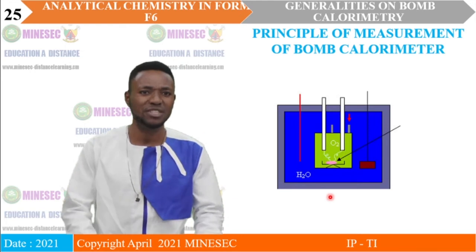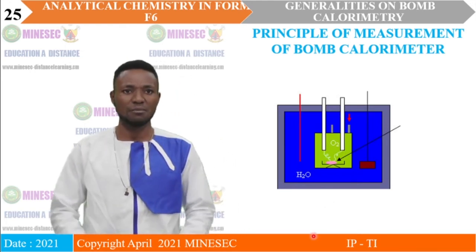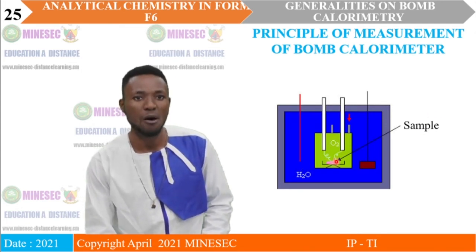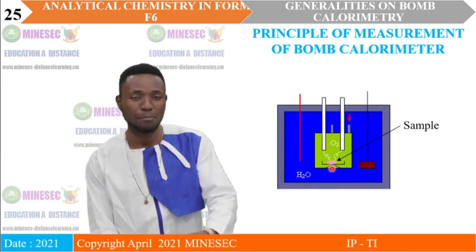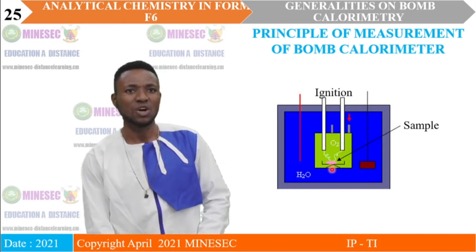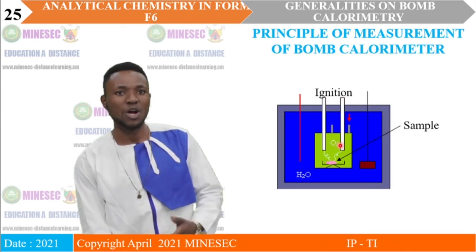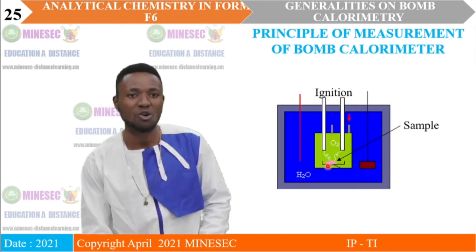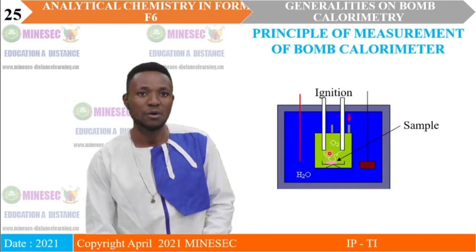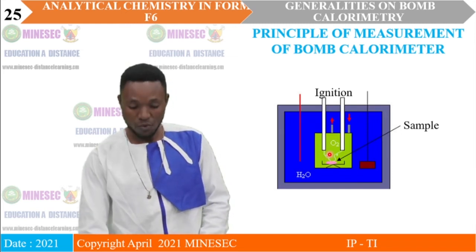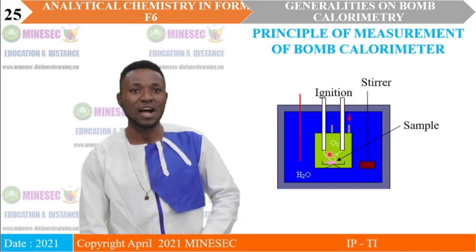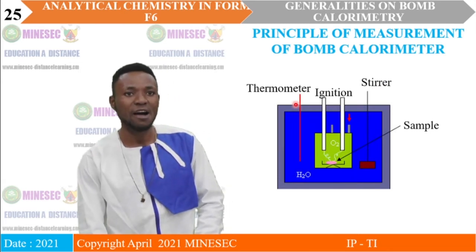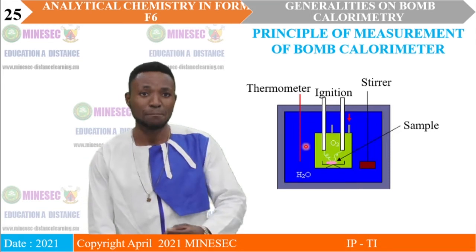Let's now look at the principle of measurement of the bomb calorimeter. First, we place our sample in the bomb on the sample carrier. After that, we turn on the ignition, which connects the two electrodes and causes combustion of the sample. Heat is generated and evenly distributed in the water through the stirrer, and the thermometer is used to read the temperature of the water.